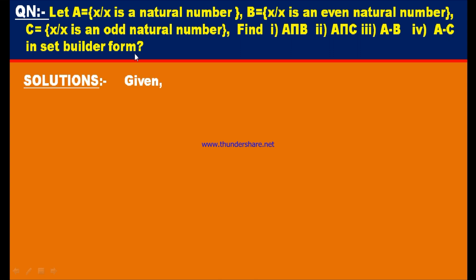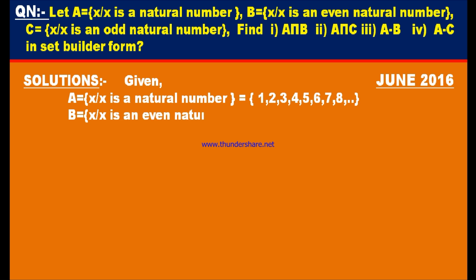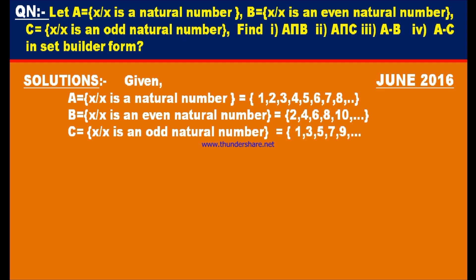This question appeared in June 2016. A = {1, 2, 3, 4, 5, 6, 7, 8, ...} (natural numbers). B = {2, 4, 6, 8, 10, 12, ...} (even natural numbers). C = {1, 3, 5, 7, 9, ...} (odd natural numbers).